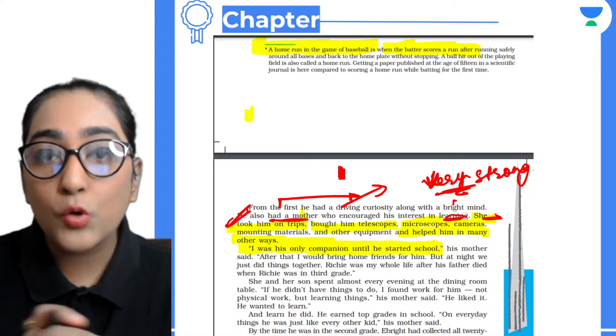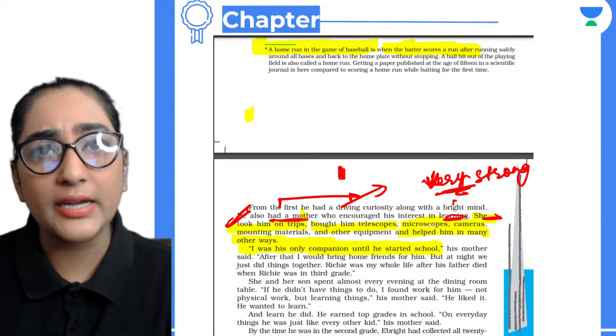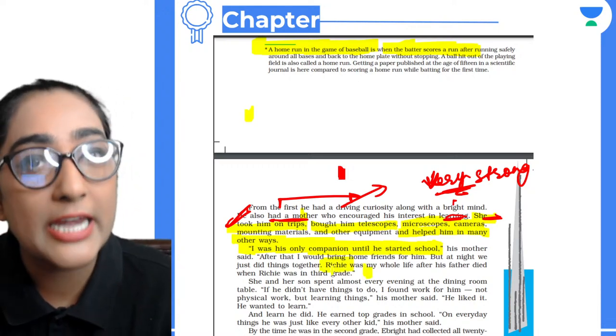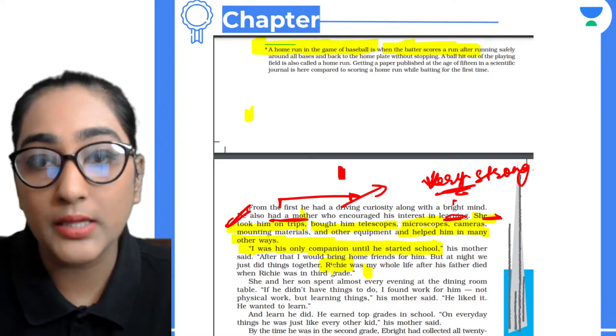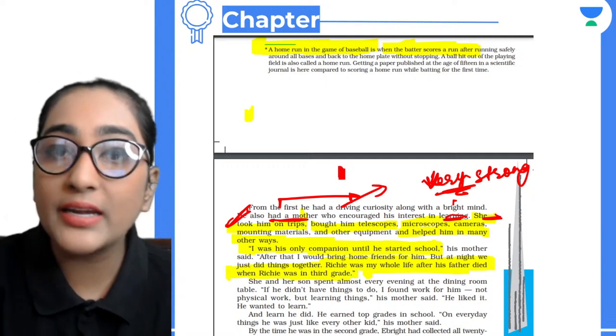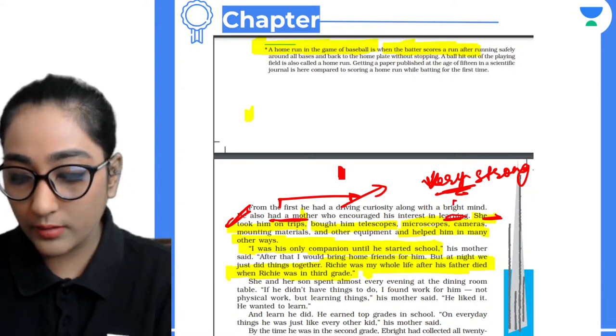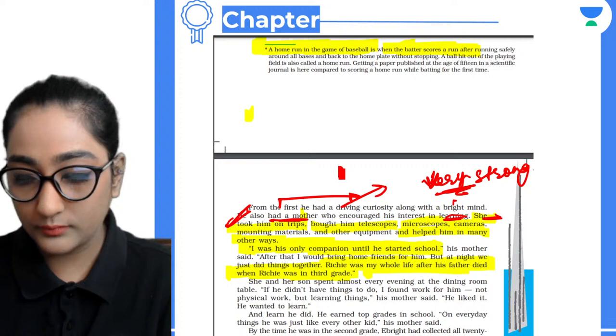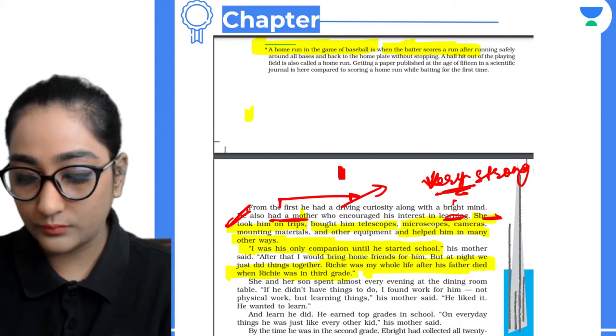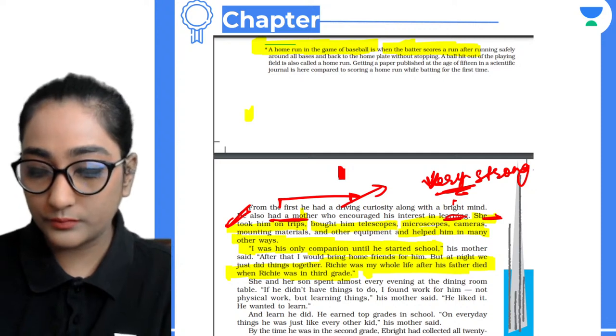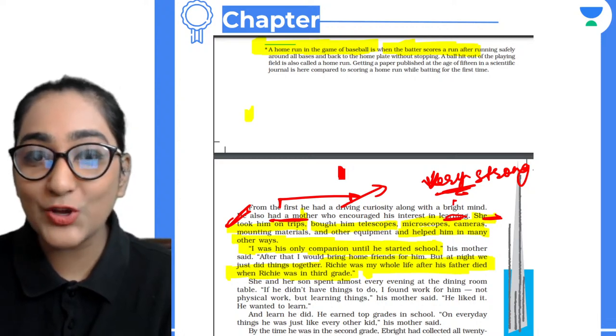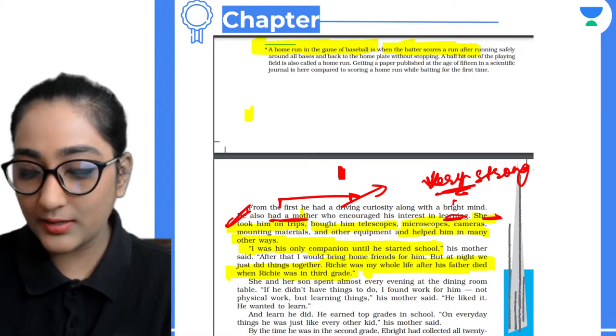After that, I would bring friends for him. But at night, we just did things together. Richie was my whole life after his father died when Richie was in third grade. Richie is the short name, the nickname that her mother used to call him by. There's another piece of information - he was in third grade when his father died.